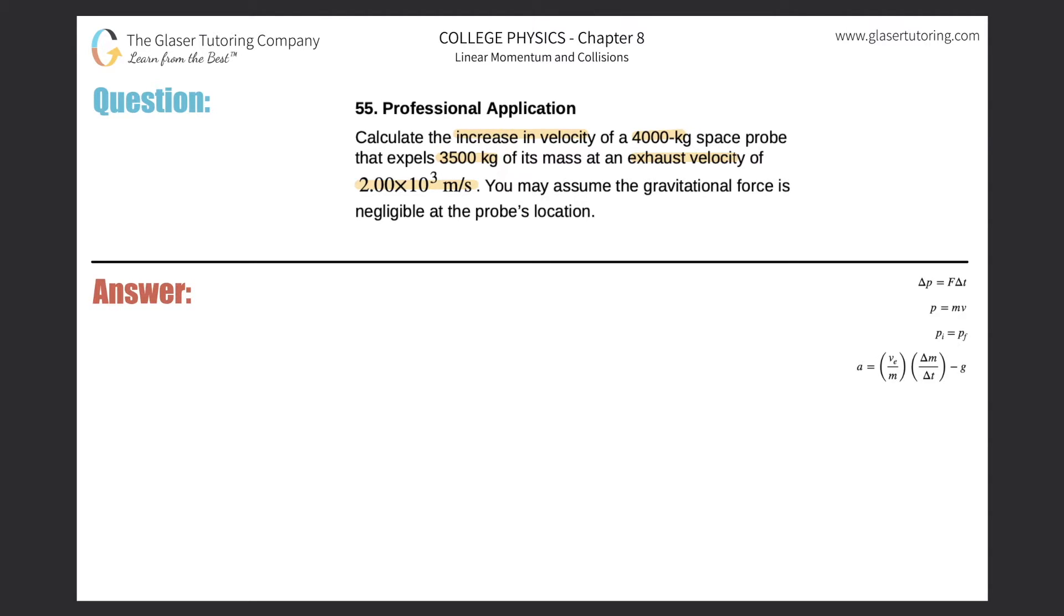All right, so I think in the book they discuss this particular formula, so we can find the increase in velocity by using this particular formula. It says that the increase in velocity is equal to the exhaust velocity multiplied by the natural log of the initial mass divided by the final mass.